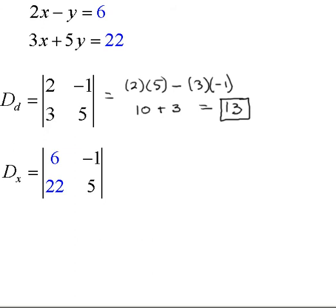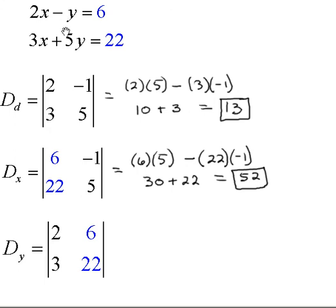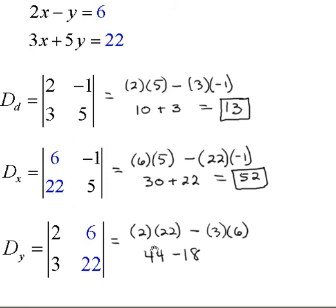For the numerator of x, we replace the x coefficients — 2 and 3 — with the constants 6 and 22. Multiply the diagonal going down: 6 times 5. Subtract the diagonal going up: 22 times negative 1. That gives us 30 minus negative 22, which is 30 plus 22, equaling 52 as the numerator of x. For the numerator of y, we replace the y coefficients — negative 1 and 5 — with the constants 6 and 22. Multiply the diagonal going down: 2 times 22. Subtract the diagonal going up: 3 times 6. That gives us 44 minus 18, which equals 26.